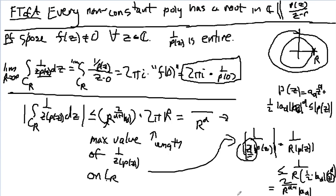Picking up where we left off, we're going to prove that every non-constant polynomial has a root. If we assume not, that means that 1 over p of z is entire.